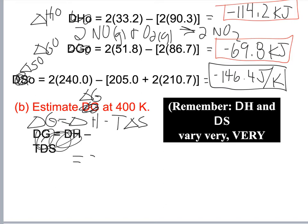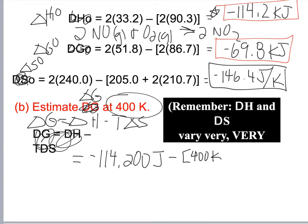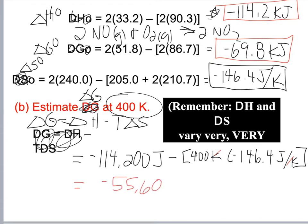So: delta H equals negative 114,200 joules (negative 114.2 kJ), minus 400 Kelvin times negative 146.4 joules per Kelvin. The joules and Kelvin units cancel, giving delta G equals negative 55,600 joules, or negative 55.6 kilojoules.